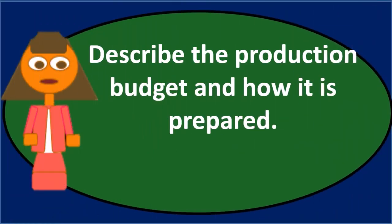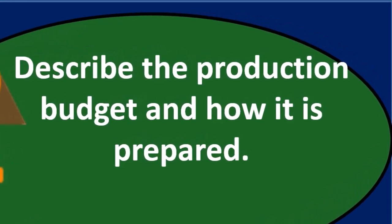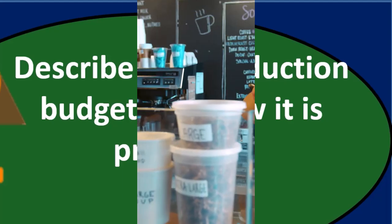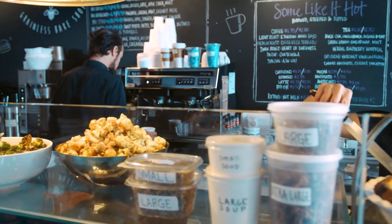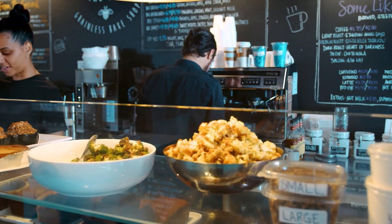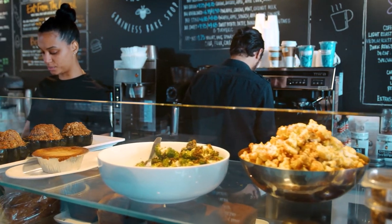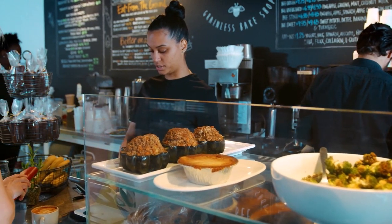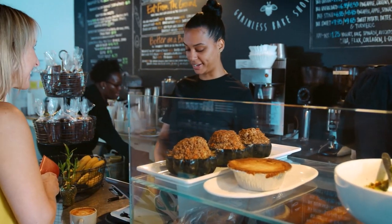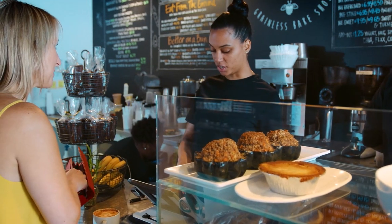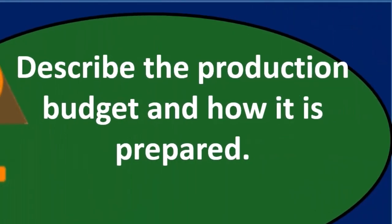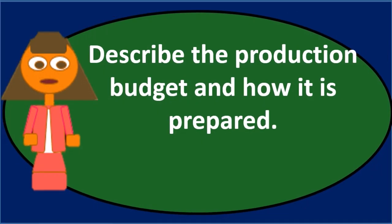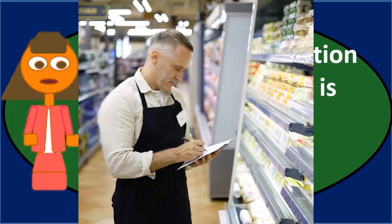We need the sales budget because we need to know how much we're going to sell in order to know how many we're going to produce. However, we're not going to produce the same amount that we sell, because one, we may have a beginning inventory — units already there from the prior period. And two, we want to give some leeway in case our sales are higher than expected. So we want to produce some more and have an expected ending inventory at the end of the period.